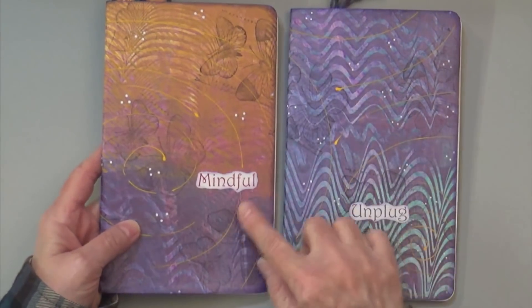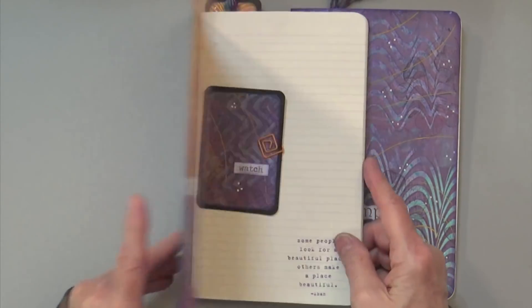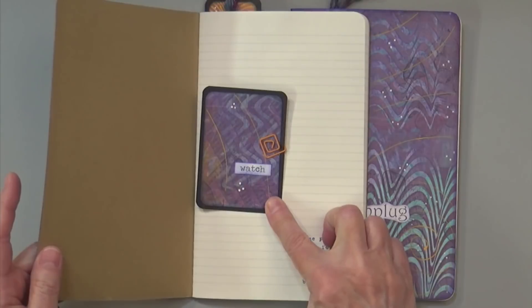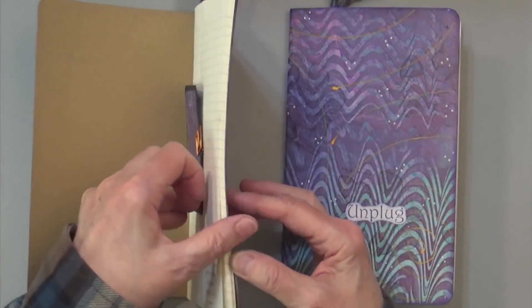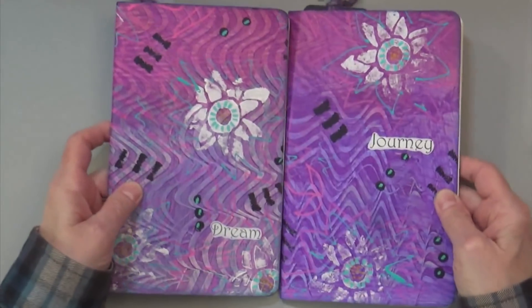It's funny how different these turned out. These are from the exact same piece of paper. There's the ATC for this one, and again the stamping and the bookmark. Here are these two.